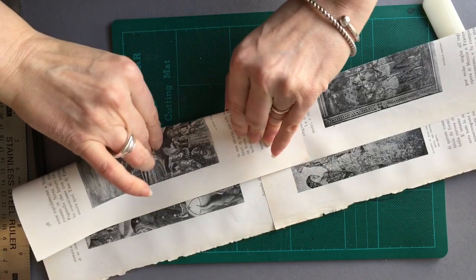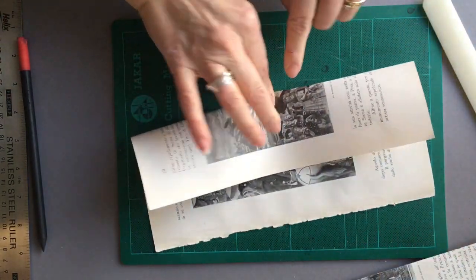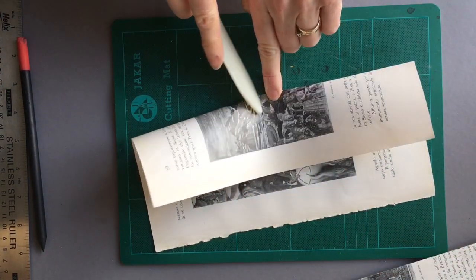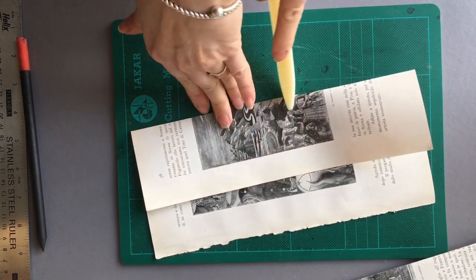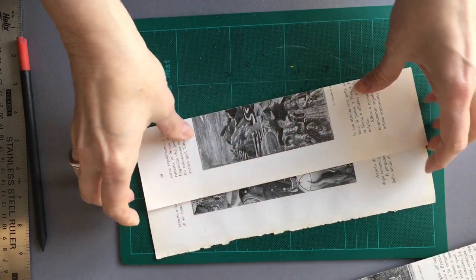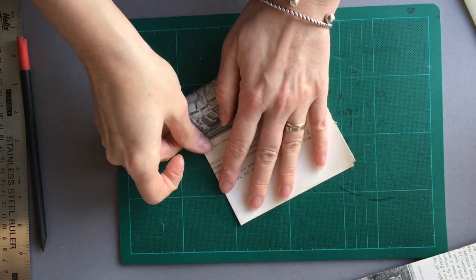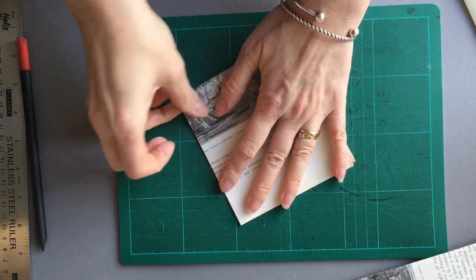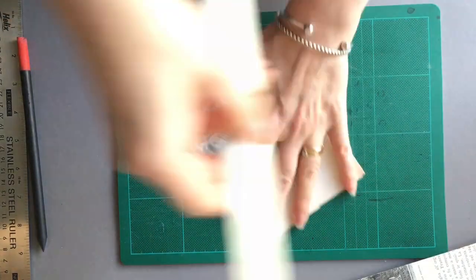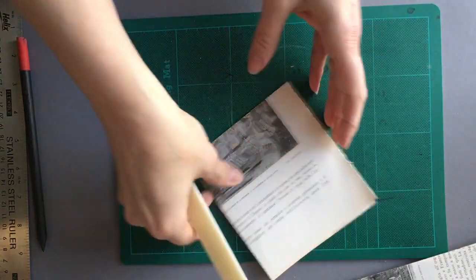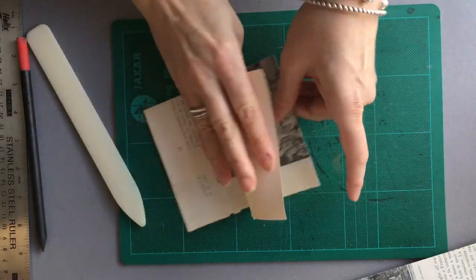Hold that in the middle, bone folder one side, second side. Then with each of these, fold in half, bone folder, and then in half again.